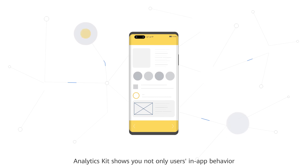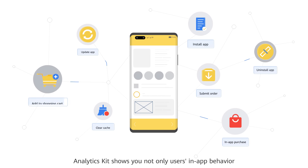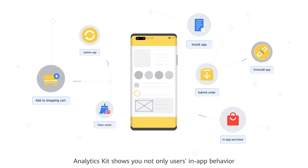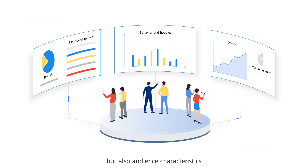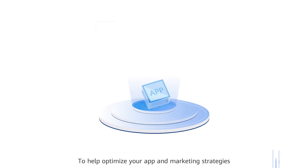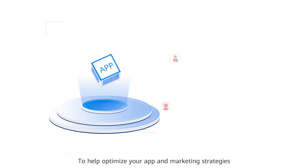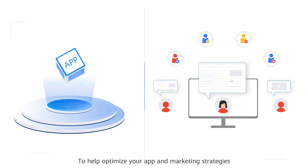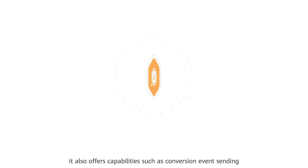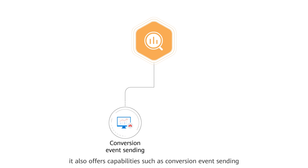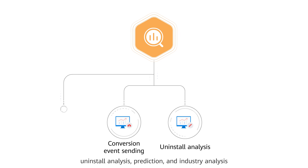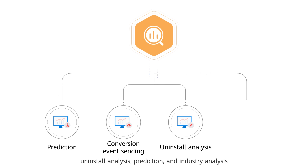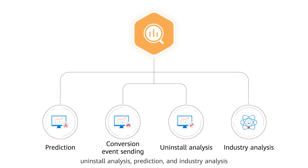Analytics Kit shows you not only users' in-app behavior, but also audience characteristics. To help optimize your app and marketing strategies, it also offers capabilities such as conversion event sending, uninstall analysis, prediction, and industry analysis.